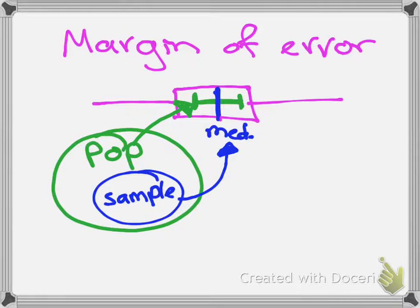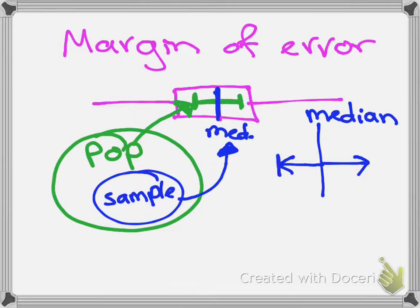So the idea is that we take a sample median, and then we go up by a little bit, go down by a little bit, and that gives us the range of values that we draw our confidence interval for. Now this little bit that we go up or down, that is called a margin of error.